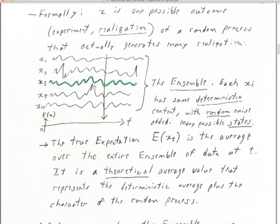Every single seismogram in the ensemble has the same deterministic component — the same P arrivals, the same Rayleigh wave arrivals, the same station effects, the same source effects. But where there are random processes within those, that's where we generate more members of the ensemble. So every member has the same deterministic content, then there's random noise and convolutional noise added — each seismogram is a different state, a different possible future.